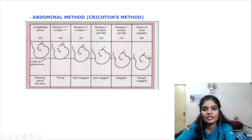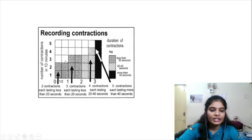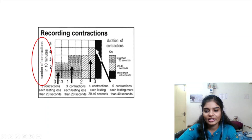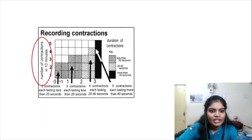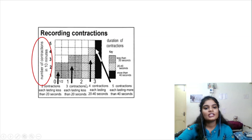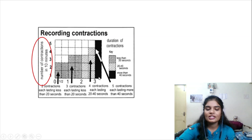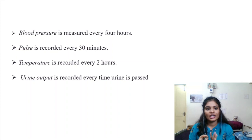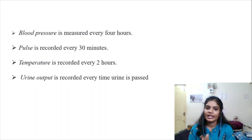For uterine contractions, there are always 5 boxes representing the number of contractions in 10 minutes. If 2 boxes are shaded, it means 2 contractions in 10 minutes; 5 boxes shaded means 5 contractions. Different shading patterns indicate duration: dots mean less than 20 seconds; lines mean 20 to 40 seconds; completely shaded means more than 40 seconds.